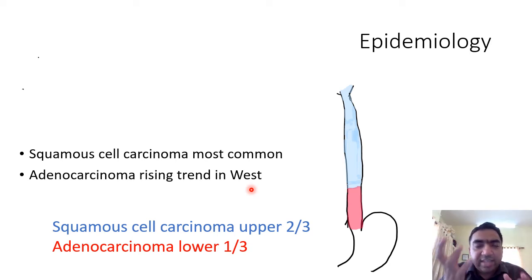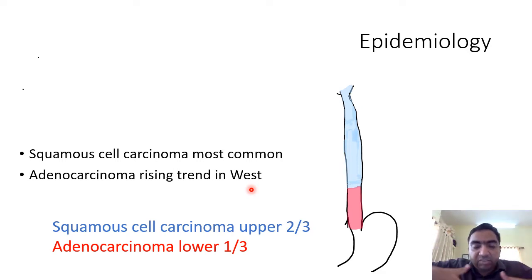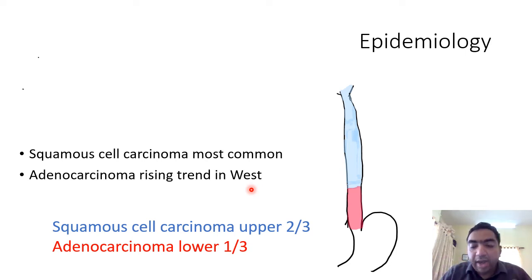However, adenocarcinoma has a rising trend because due to increased obesity and gastroesophageal reflux disease in the west, there will be a higher amount of Barrett's esophagus because of acid reflux towards the lower part of the esophagus, resulting in an increasing trend in adenocarcinoma of the esophagus.